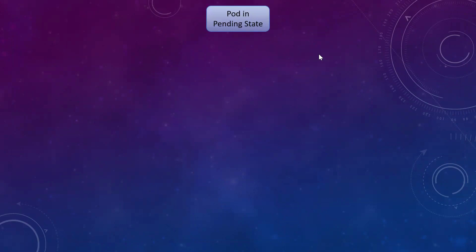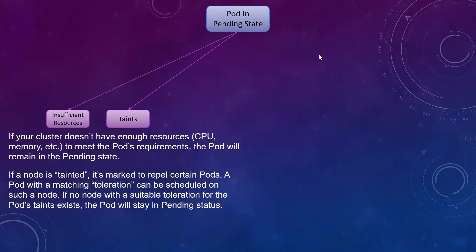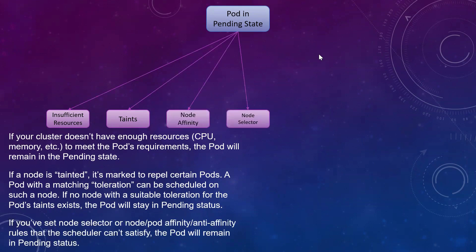What are the possibilities that pods can be in a pending state? One can be insufficient resources — you may request certain resources in the pod's requests and limits that don't match what's available on your nodes. The second case is maybe the node is tainted, and a matching toleration is needed. If that is not matched, your pod won't be scheduled onto the node, so you have to check your pod deployment configurations.